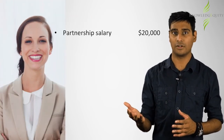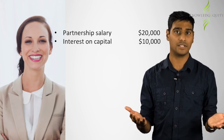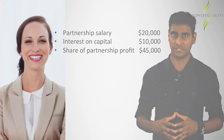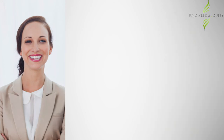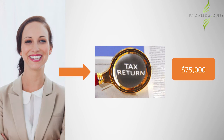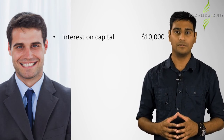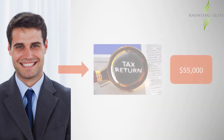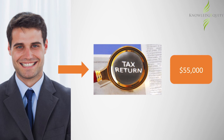This means Alice's share of the partnership income is $20,000 partnership salary plus $10,000 interest on capital plus $45,000 share of the rest of the partnership profits. Under section 92, this $75,000 is Alice's share of the partnership profit and constitutes her assessable income in her personal tax return. Bill's share is $10,000 interest on capital plus $45,000 share of the remaining profit, so $55,000 constitutes Bill's assessable income in his personal tax return.